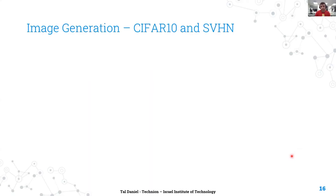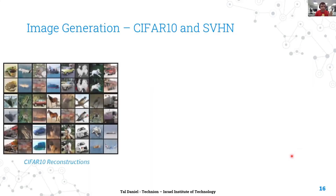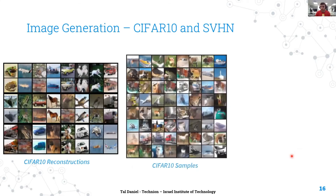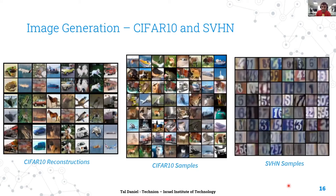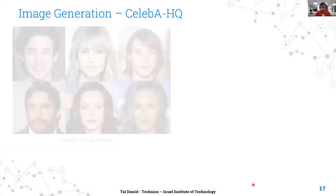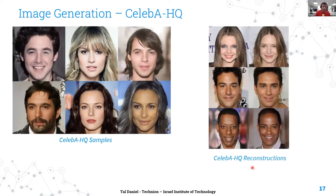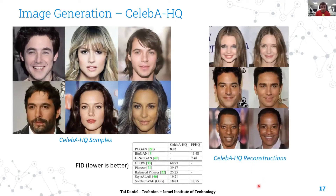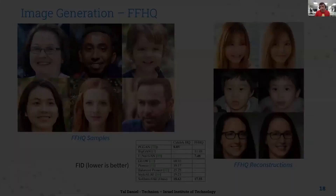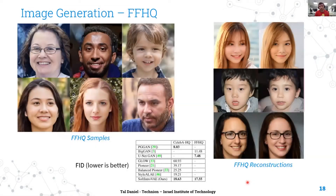For image generation, we evaluated in terms of both inference — reconstruction of unseen data — and sampling, which means generation of new data. For the smaller resolution datasets CIFAR-10 and SVHN, we used the standard CNN architecture for the encoder and decoder. Note that the ability to reconstruct real data is related to the inference model of the VAE, something not explicitly possible in GANs. For higher resolution datasets — CelebA-HQ, FFHQ, and LSUN Bedrooms — we used a style-based architecture. Our model further narrows the sampling quality gap in terms of FID to GANs and outperforms all other autoencoding methods. Results on FFHQ are shown here, and results on LSUN Bedrooms can be found in the paper.